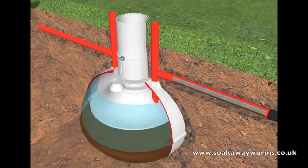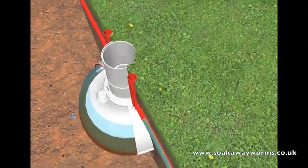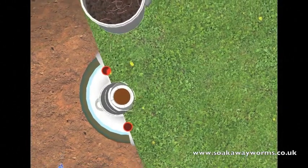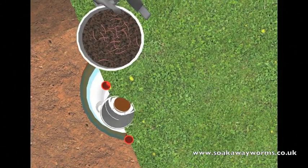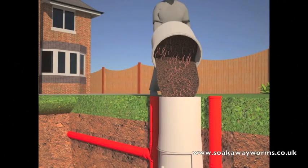Once your soakaway worms have turned up via special delivery, simply get the bucket of soakaway worms, take the lid off, then take the worms to your septic tank, take the lid off the septic tank and just pour the bucket of worms into the septic tank.